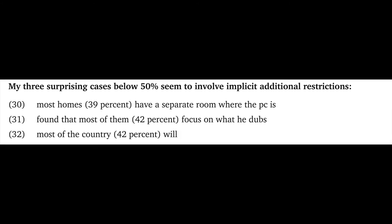One quirk of my data is that there are actually three examples where the percentage cited is below 50%. For example, in 30, we have most homes, 39% have a separate room where the PC is. Now, my hypothesis is that in these cases, there is an implicit restriction at work here. For example, I bet that in 30, we first restricted to cases where the home contained a computer at all. And within that group, more than 50% were probably in a separate room. But they only had stats for the full set of homes surveyed. And so they gave us that stat, which was 39%. I might be wrong, but otherwise, I think these examples are very confusing to me. So I'm going to stick with that theory for now.